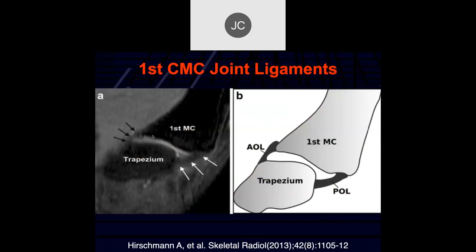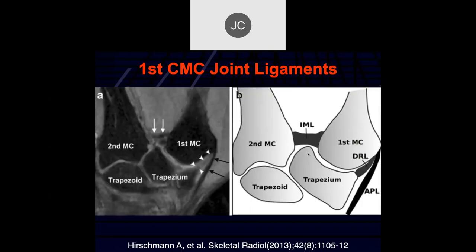In the sagittal plane we can see the trapezium and the first metacarpal — here is the anterior oblique ligament, the posterior oblique ligaments, which are the anterior and posterior capsule. Here we can see the intermetatarsal ligament and the capsule. This is the abductor pollicis longus tendon coming across here.